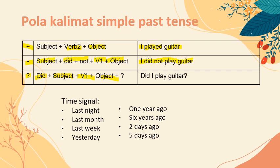Di dalam simple past tense juga ada time signal. Jadi waktu-waktu yang bisa kita gunakan di dalam simple past tense: 'last night' (tadi malam), 'last month' (bulan lalu), 'last week' (minggu lalu), 'yesterday' (kemarin), 'one year ago' (satu tahun yang lalu), 'six years ago' (enam tahun yang lalu), 'two days ago' (dua hari yang lalu), 'five days ago' (lima hari yang lalu). Jadi ini semuanya lampau — dulu semua.